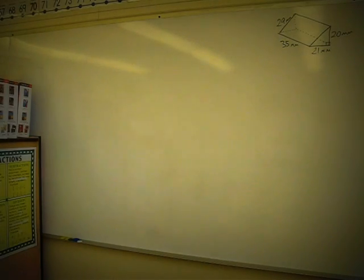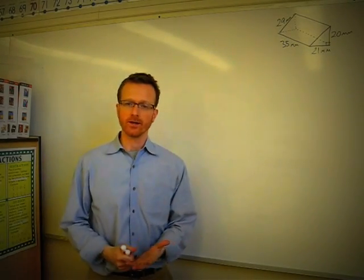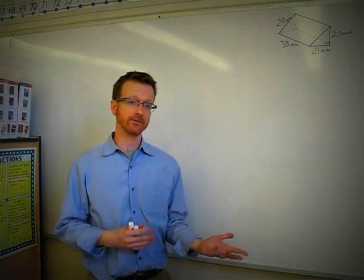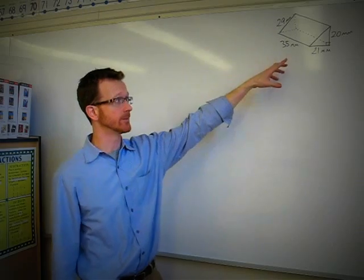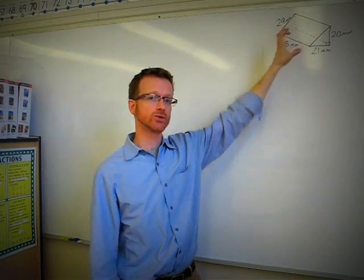So let's take a look at what we have. When we're dealing with a triangular prism, the surface area is just the area of all of the surfaces. So we need to figure out how many surfaces we have. In the triangular prism, we have two triangles on each side. So there's two surfaces right there.